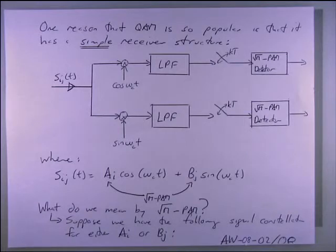Likewise, in the lower branch, same thing, S_ij of T multiplied by sine omega_c T, and then take the low-pass filter, we get rid of the double frequency terms. All we're left with are the B_js, sampled every T seconds. And then we have a quantizer, a square root M-PAM detector, that quantizes all the B_j values, and again gives us binary values. That's why rectangular or square M-ary QAM signals are wonderful to implement in a receiver, because the decoding is so simple. You just need two quantizers, one acting on the real and one acting on the imaginary portion of your data. It's fantastic.